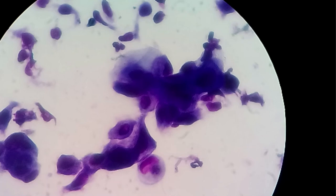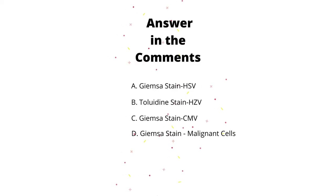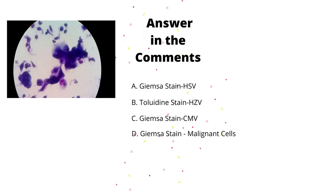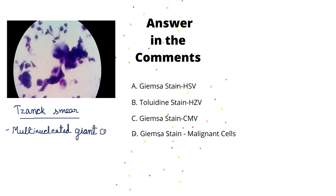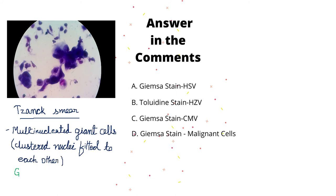If we clearly see this picture, this is a typical presentation of a Tzanck smear. It is typically seen in Herpes Simplex Virus and can also be seen in Herpes Zoster. In this picture, Giemsa staining is done and Tzanck cells are seen. Tzanck cells are multinucleated giant cells containing numerous nuclei fitted to each other, and this gives a typical ground-glass appearance.